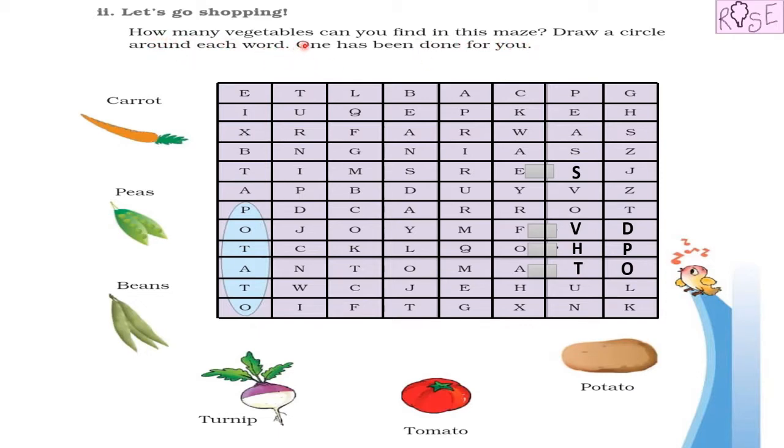So what we have to do? We have to find vegetables in this maze. How many vegetables can you find in this maze? Draw a circle around each word. One has been done for you.